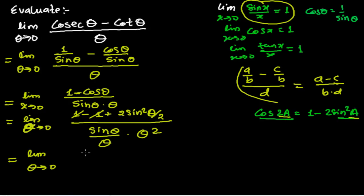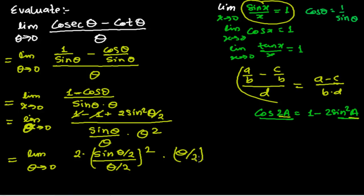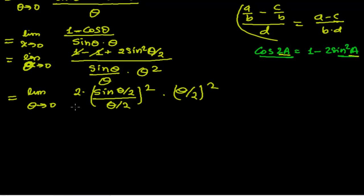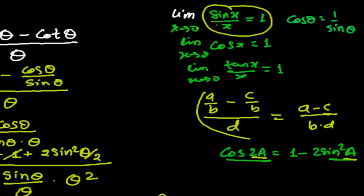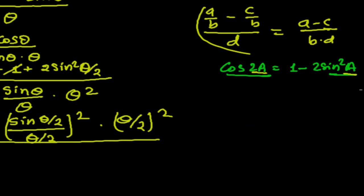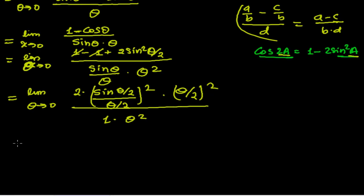So limit as θ tends to 0: 2 times sin²(θ/2), multiplied by (θ/2)² divided by (θ/2)² — I divide by (θ/2) so I must also multiply by (θ/2)². This gives us (θ/2)² in the denominator as well. Then using the standard form: limit of sin(x)/x as x tends to 0 equals 1. So limit as θ tends to 0 of sin(θ)/θ = 1.